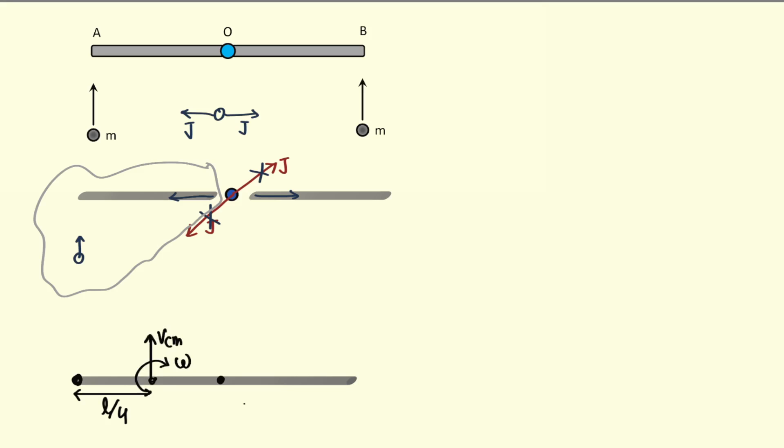We can compute v_cm, but we're only interested in finding omega. So why waste energy applying linear momentum conservation? We will apply angular momentum conservation about the center of mass. Before the collision, the point mass m is moving with velocity u perpendicular to the rod. After the collision, the whole system rotates about its center of mass with angular velocity omega. Let us apply conservation of angular momentum.